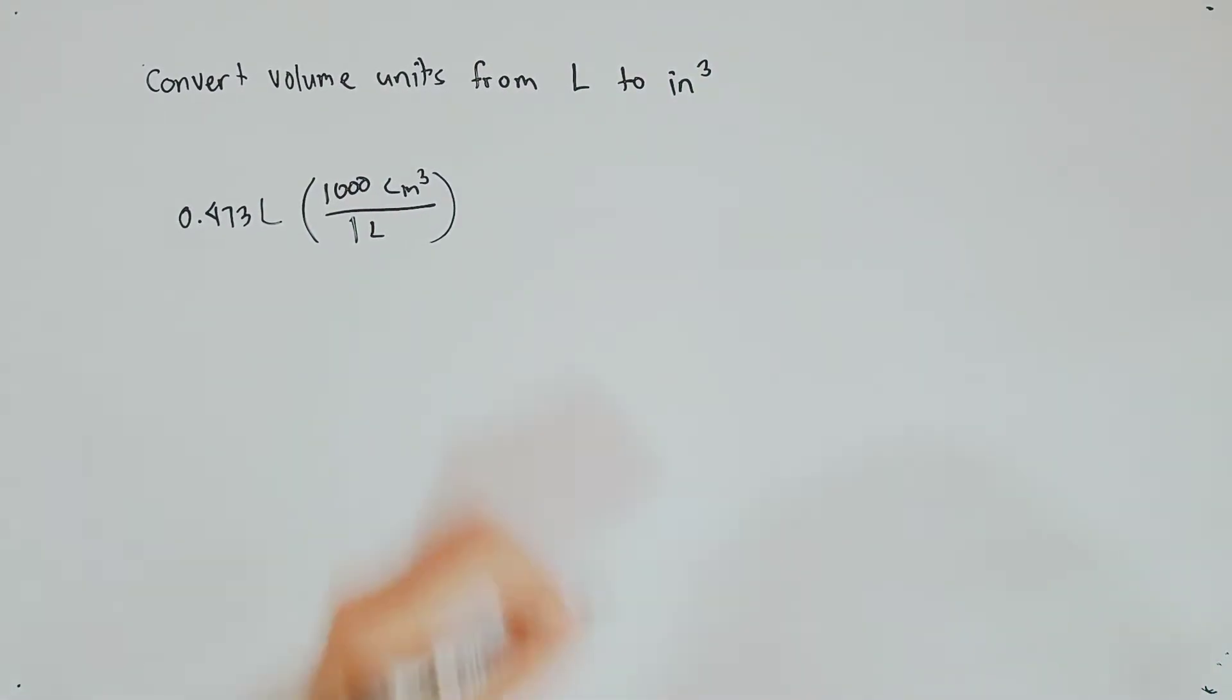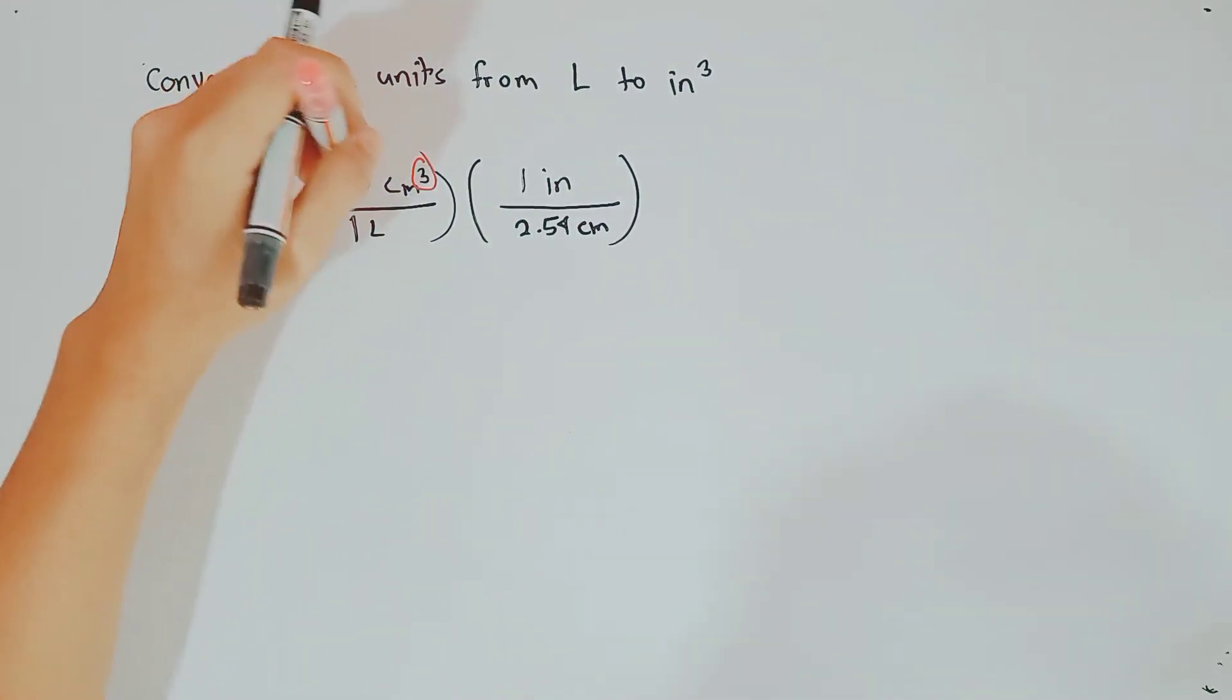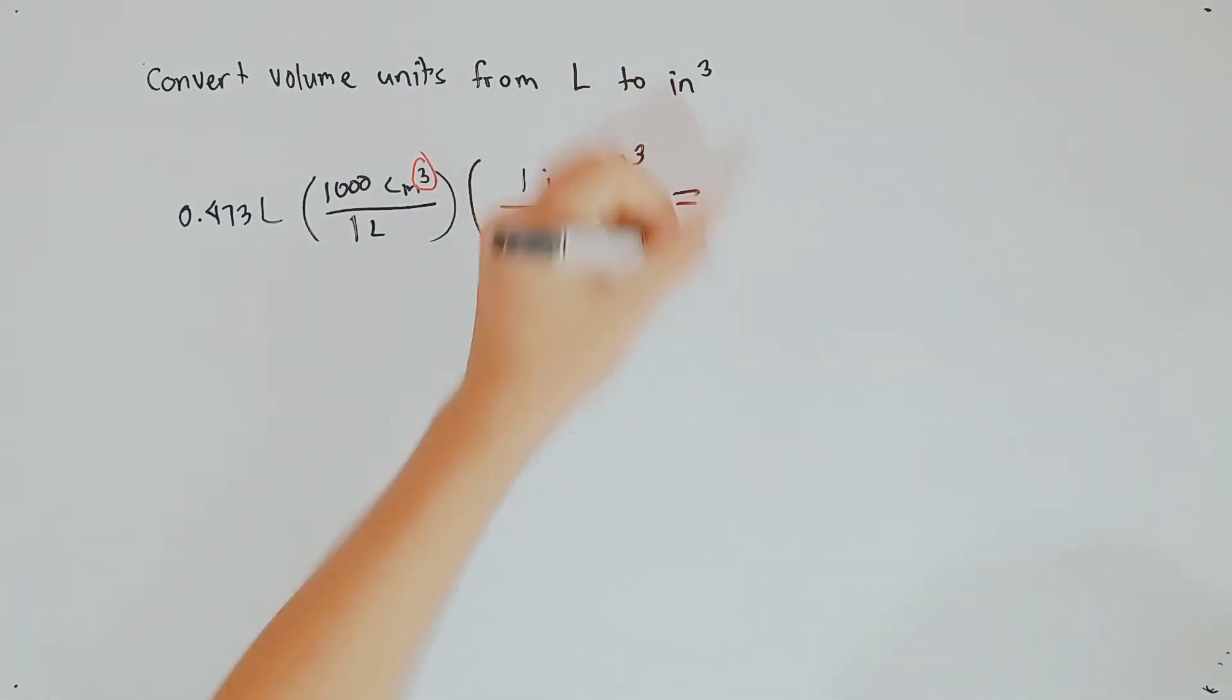And to cancel out the centimeter, we can use 1 inch is equal to 2.54 centimeter. Centimeter should be in the denominator. And since it is cubic centimeter, let's put a cube here so that it will be in cubic.